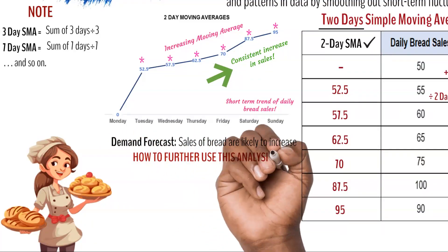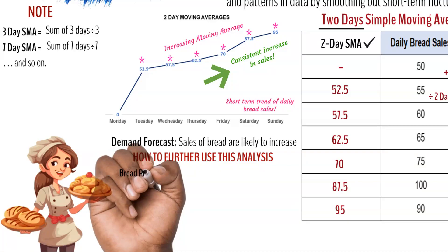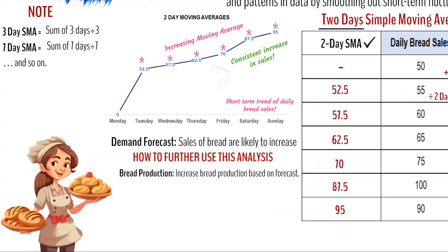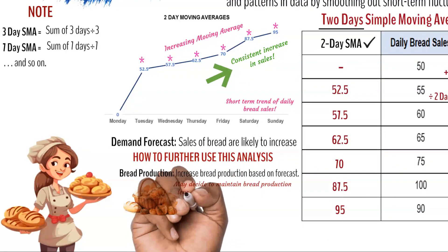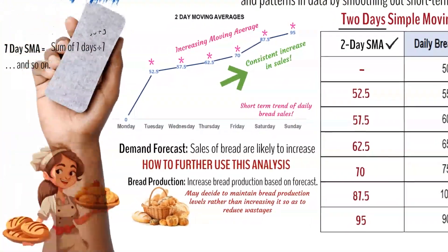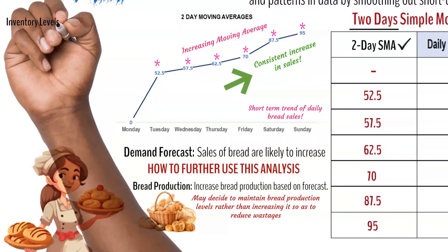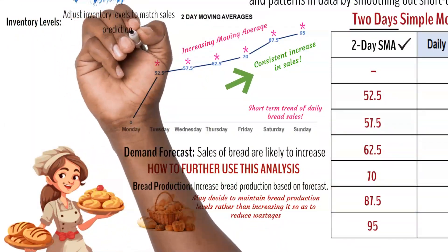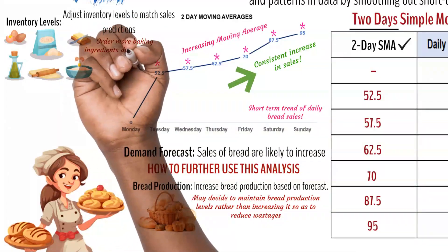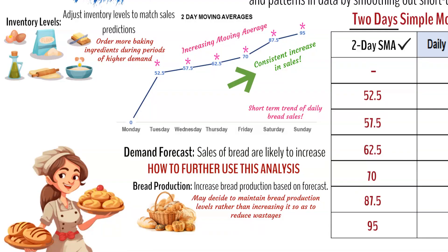If the two-day simple moving average shows a consistent increase in sales and indicates that daily sales are likely to be higher the following day, the baker can use this insight to adjust their production accordingly. If they typically produce 100 loaves per day, they might consider increasing production to 110 loaves to meet expected demand, or keeping it at 100 loaves to reduce wastage. The baker is required to use the results from the calculated simple moving average to make an informed decision. The baker could also use this data to forecast inventory levels — adjusting inventory more effectively and ordering more baking ingredients to meet higher demand on busy days such as weekends.